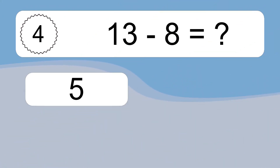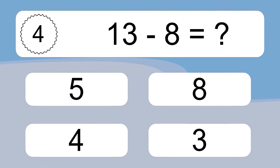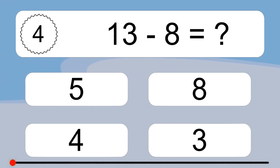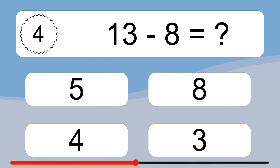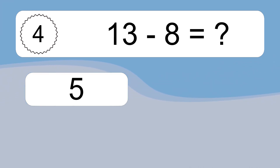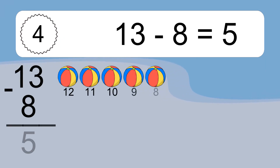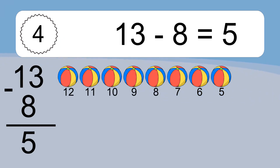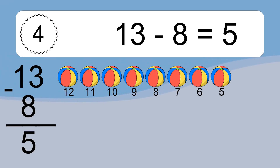13 minus 8 equals what? 13 minus 8 equals 5. Let's count it: 12, 11, 10, 9, 8, 7, 6, 5.